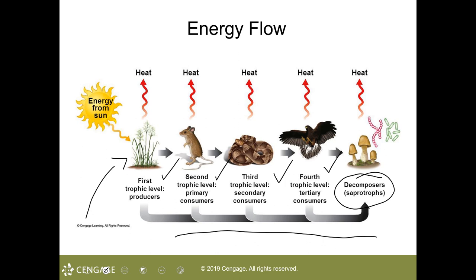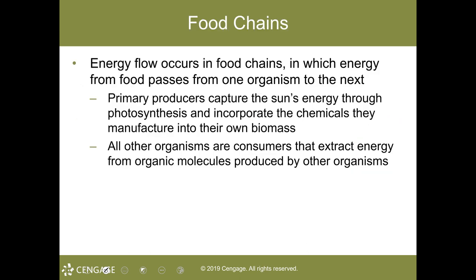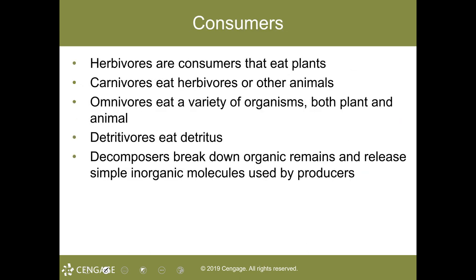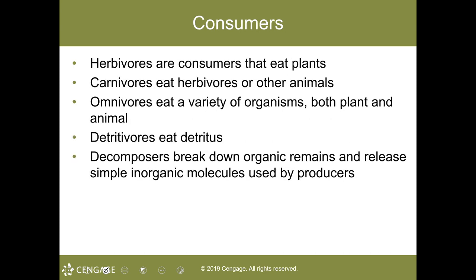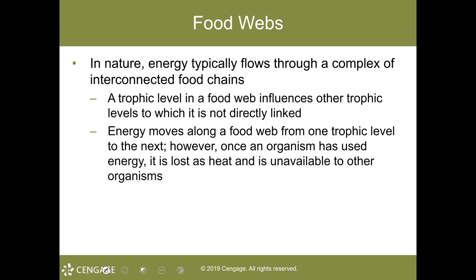Food chains are a simplistic way of showing energy flow. However, a complex of interconnected food chains — which provides a more realistic model of how food energy and materials move through an ecosystem — is known as a food web. In an ecosystem there are alternative pathways of who eats whom, ultimately ending up at the food web.